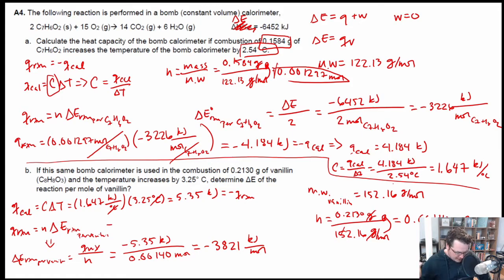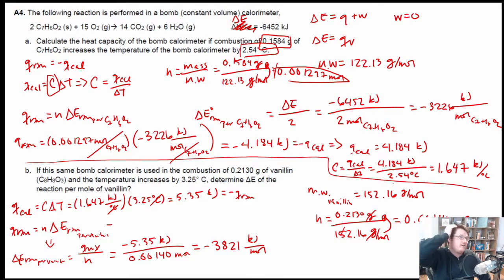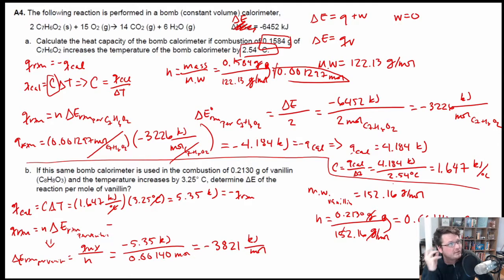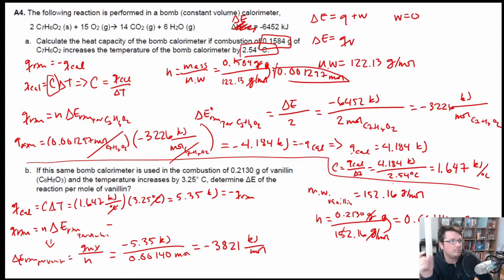That's the delta E per mole of vanillin. The general process is making sure you know how many moles of substance you're doing the calorimetry with, and understanding the relationship between the calorimeter and the reaction, and applying all of those different approaches.